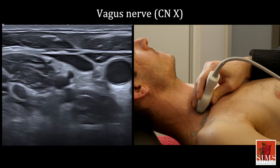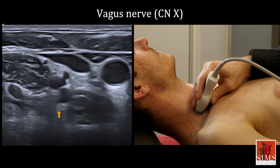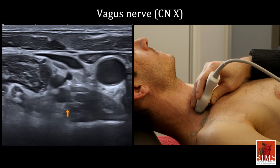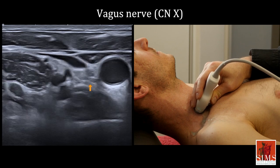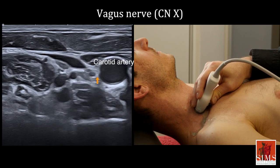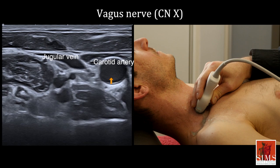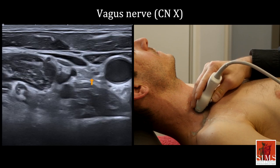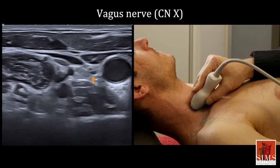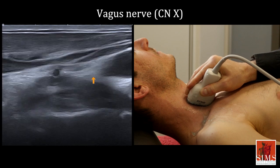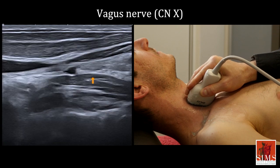Now we are going to study the smaller cervical nerves. The vagus nerve CN10 is between the carotid artery and the jugular vein. These two vascular landmarks make it easy to spot here under the arrow, and here in a longitudinal view.